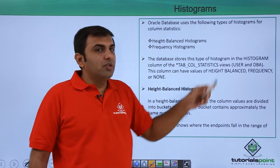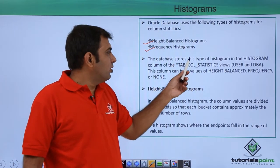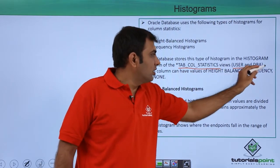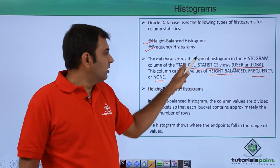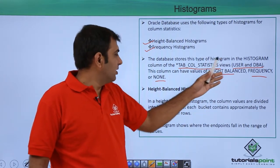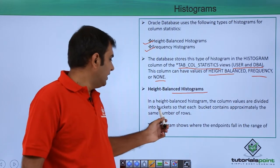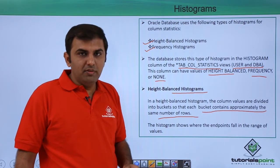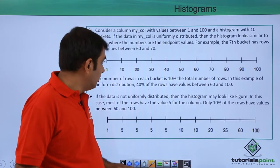Oracle database uses the following types of histograms: one is a Height-Balanced histogram and another is a Frequency histogram. The database stores the histogram type in the histogram column of the tab_col_statistics view, or user_ or DBA_ versions. This column can have a value of height balanced, frequency, or null. In the height-balanced histogram, the column values are divided into buckets so that each bucket contains approximately the same number of rows.